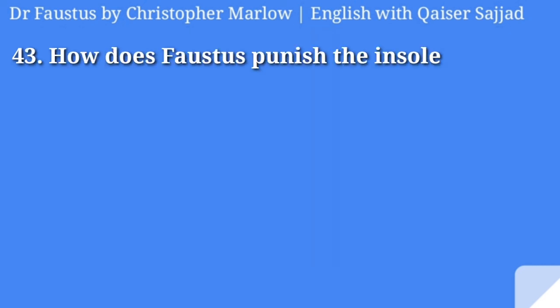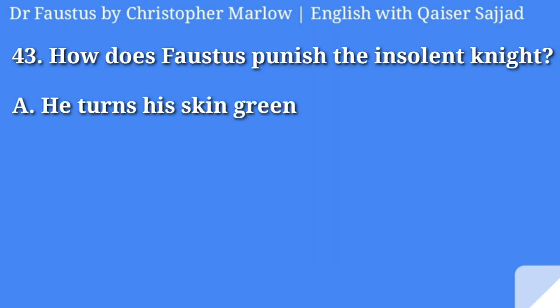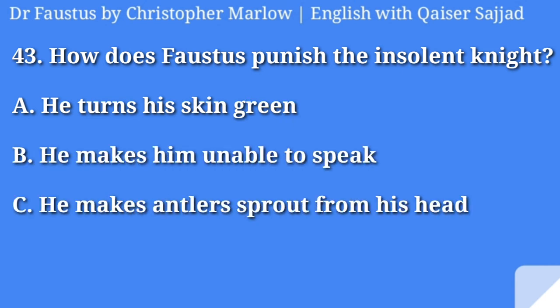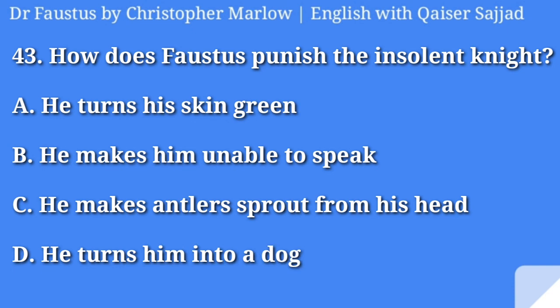How does Faustus punish the insolent knight? He turns his skin green, he makes him unable to speak, he makes antlers sprout from his head, or he turns him into a dog? Answer is option C, he makes antlers sprout from his head.